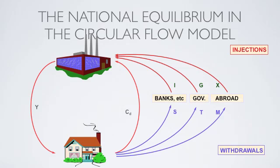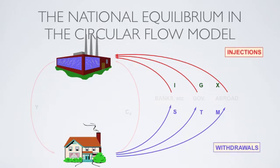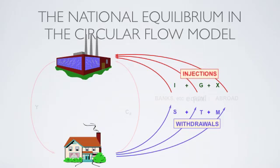Last class we started to learn about the Circular Flow Model, as it is shown here again. We have learned that in equilibrium injections equal withdrawals, so that J minus W will be zero.